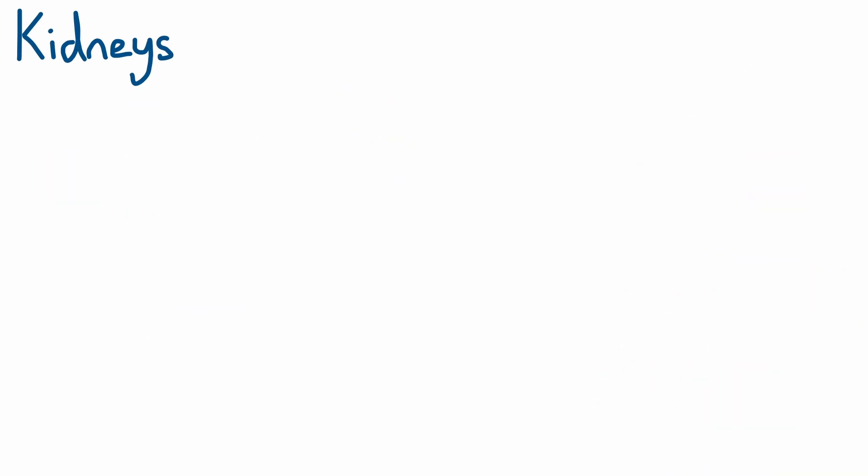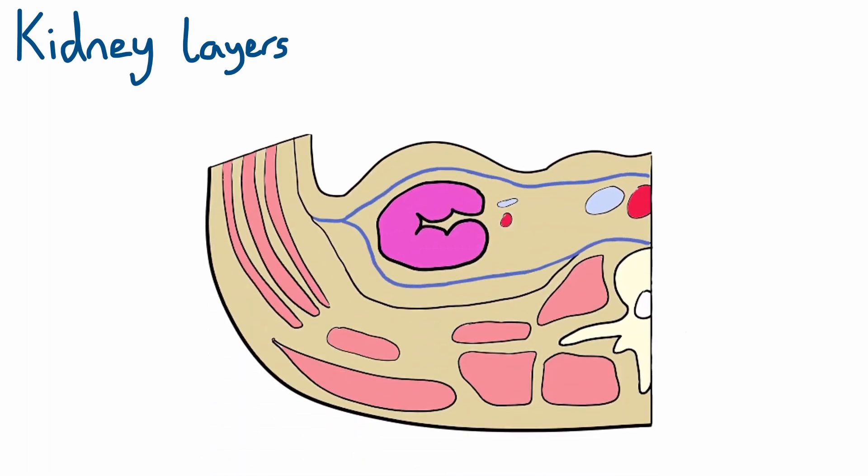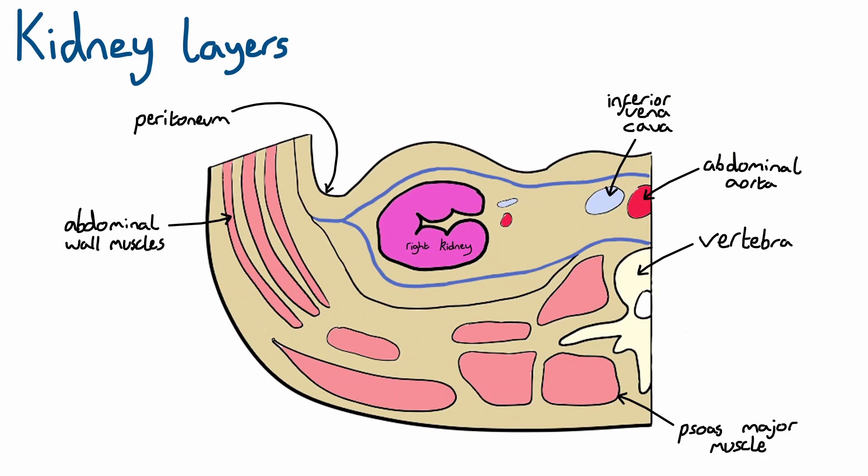Let's have a look at the anatomical structure of the kidneys' layers. This image is drawn in the coronal plane, as if looking at the body from the feet end. I'll label some bits of anatomy to help you get orientated.